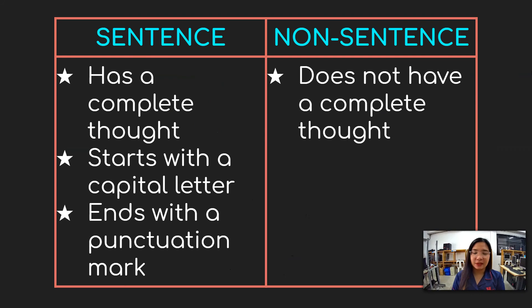We are talking about sentence and non-sentence. A sentence has a complete thought. It starts with a capital or a big letter, and it ends with a punctuation mark. A non-sentence doesn't have a complete thought or complete idea.